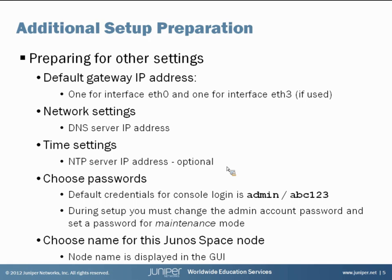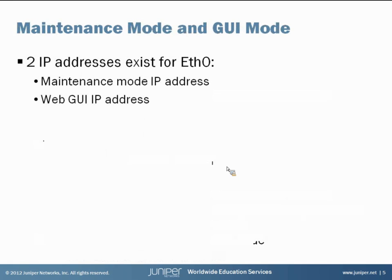Additional setup items require you to choose a name for the Juno Space node, which will be displayed in the GUI interface. When you set up the Juno Space Virtual Appliance, there are two IP addresses for interface ethernet zero: the maintenance mode IP address and the web GUI IP address. Maintenance mode is used for maintenance items like the initial install, while the web GUI IP is what administrators log into to perform management within Juno Space.